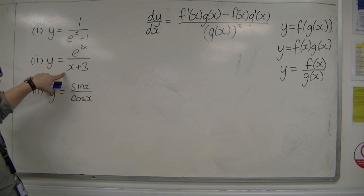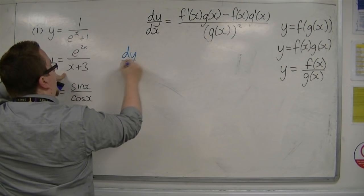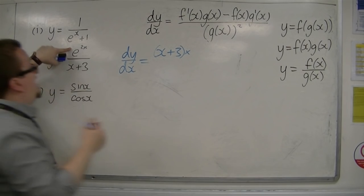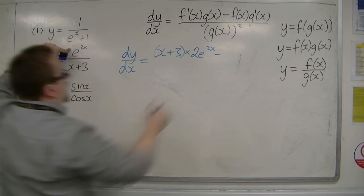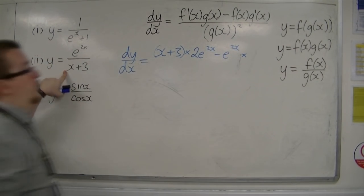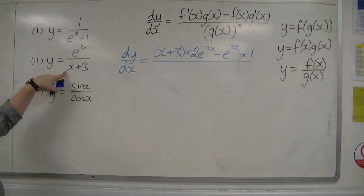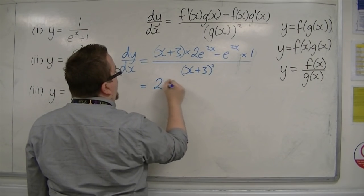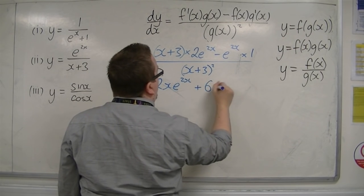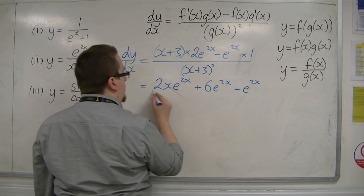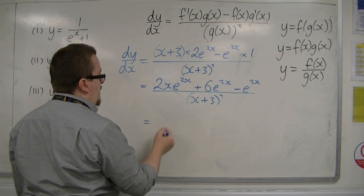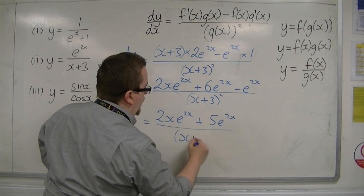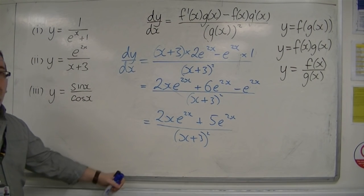For number 2, y equals e to the 2x over x plus 3. So dy by dx equals the bottom, x plus 3, times the derivative of the top, which using the chain rule is 2e to the 2x. Take away the top, e to the 2x, times the derivative of the bottom, which is 1. All over the bottom squared, so x plus 3 squared. Multiplying out the bracket gives 2x e to the 2x plus 6e to the 2x, minus e to the 2x, all over x plus 3 squared. The final answer is 2x e to the 2x plus 5e to the 2x, all over x plus 3 squared.